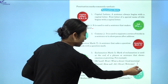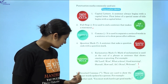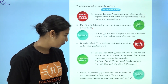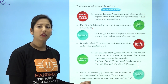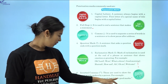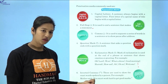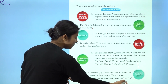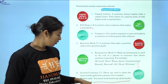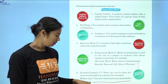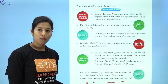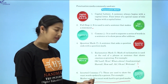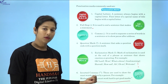Examples of exclamation mark include: Wow! Good morning! How sad! Oh no! And welcome! The sixth one is inverted commas. Inverted commas are used to show the exact words spoken by a person. For example, mother said, you must work hard to get good marks. We always use a comma before starting an inverted comma.